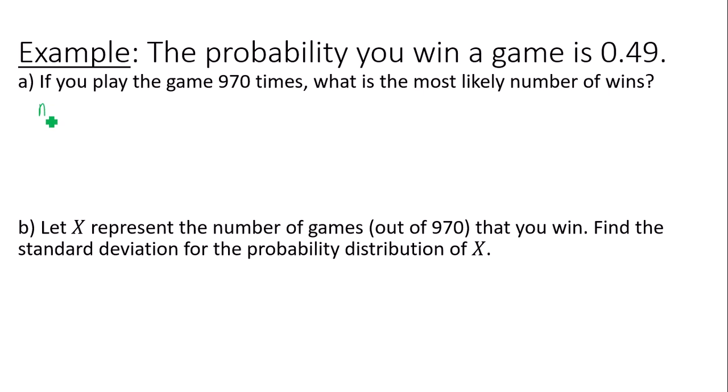My number of trials is 970. My probability of a success, meaning a success in this case is winning a game, so a success is winning, and then q is always 1 minus p, which is 1 minus 0.49, in this case 0.51.